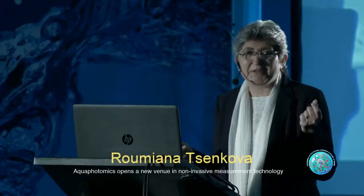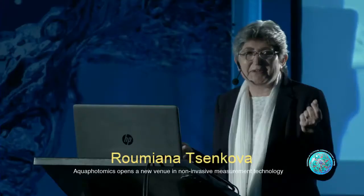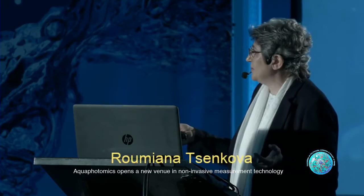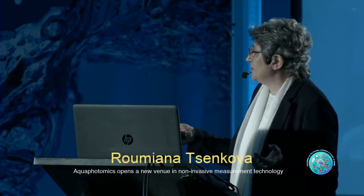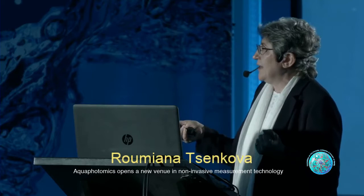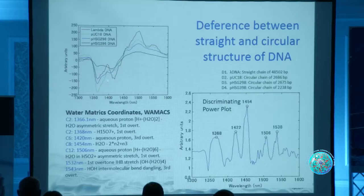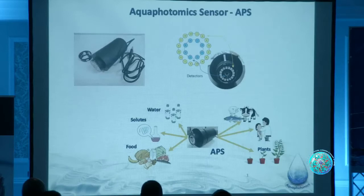Following the previous speaker, we compared circular DNA with double-stranded DNA — lambda DNA, pUC DNA, etc. When we subtracted one DNA type from another, the differences appeared exactly at the water bands: solvation shell, free water molecules, hydrogen-bonded water. Now, about the instruments we developed: this is a portable aquaphotomics sensor — one of several variations — operating in the second and third overtone water bands.